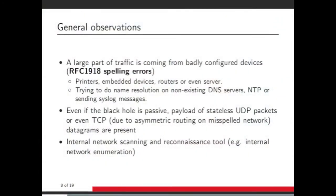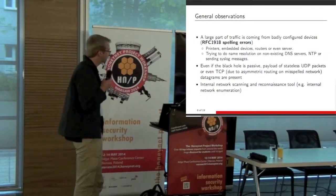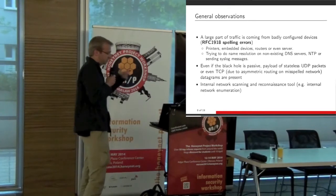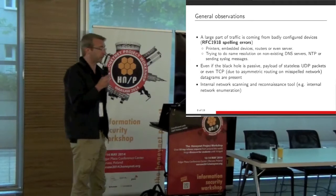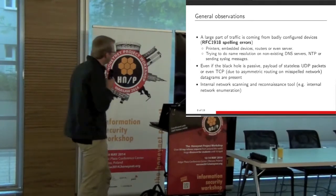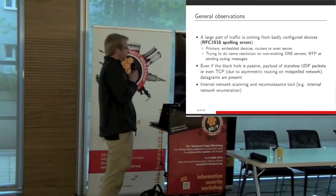General observations: traffic comes from badly configured devices — it could be anything: printers, embedded devices, fridge boxes, beamers, routers, whatever is connected to the internet. A very common thing is name resolutions going to non-existing DNS servers — I'll explain why that's quite interesting. Also NTP requests, SNMP requests, syslog messages. Those are very interesting. A lot of people say black holes aren't interesting because there's no payload, but that's not really true.